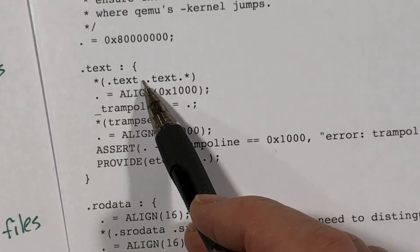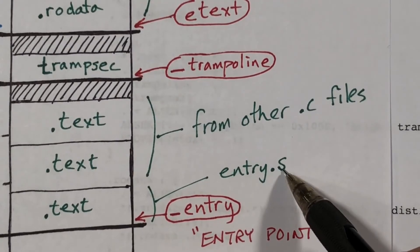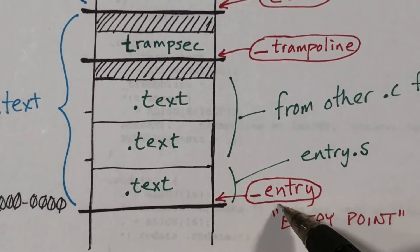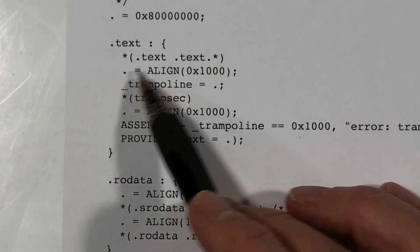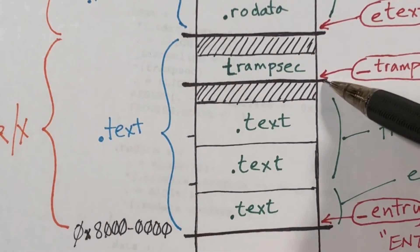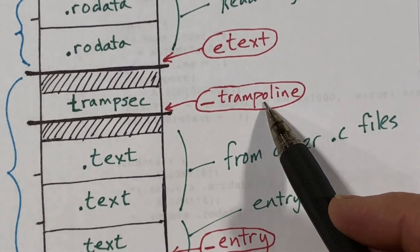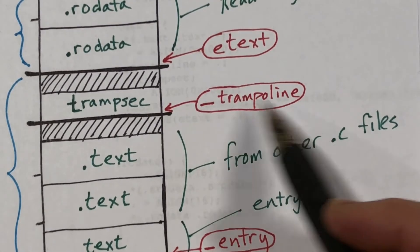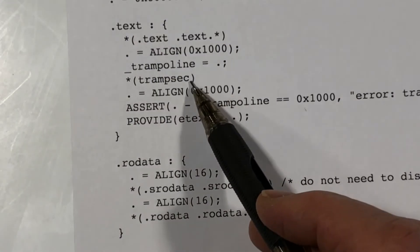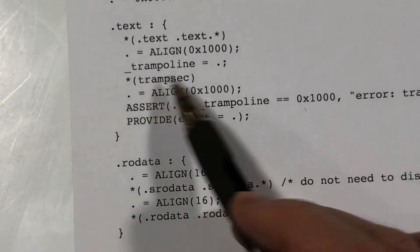These are done in order as specified on the command line. So the first object file — entry.o for the entry.s file — will go first, putting our entry right at the very beginning. Next we say dot equals align, which forces a move up to the next page boundary, so the linker inserts some unused memory here up to the next page boundary. Then it says define the label underscore trampoline as the new current location, naming that symbol with the address right there. Then we include the segment called tramp sec — the trampoline section — from whatever file it comes from, and any and all segments with this name are placed here.